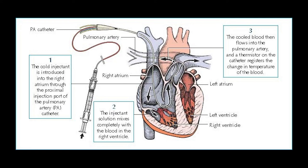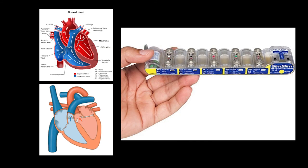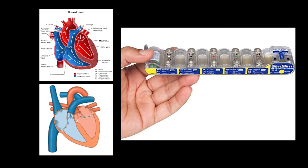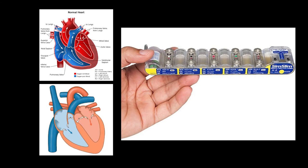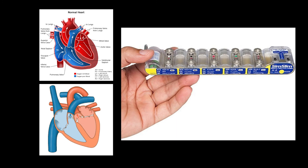The colder the measurement, the higher the cardiac output; the warmer the measurement, the slower the mixture was pumped through the heart, meaning a lower cardiac output. This brings us full circle to why I needed to cover cardiac output — in order to simulate cardiac output on simulators like the Pronk SimSlim, you first need to know the flow rate of the injection and use the temperature simulation ports on the SimSlim for the medical device to get an accurate simulated cardiac output.